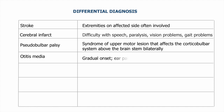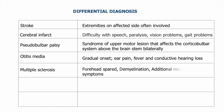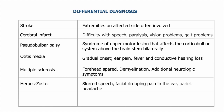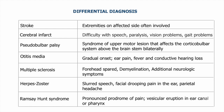Otitis media presents with gradual onset, ear pain, fever, and conductive hearing loss — it is essentially infectious, which was not seen in this case. Multiple sclerosis involves forehead-spared demyelination with additional neurological symptoms, whereas in this case the forehead was affected. Herpes zoster shows slurred speech, facial drooping, pain in the ear, and parietal headache. Ramsay Hunt syndrome has a pronounced prodrome of pain with vesicular eruptions in the ear canal or pharynx, which were not seen in this case.